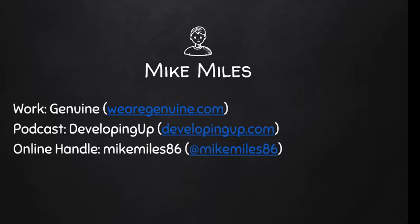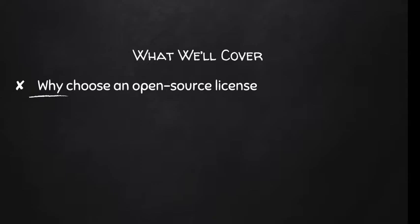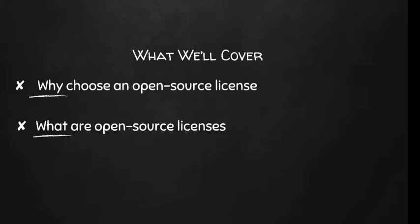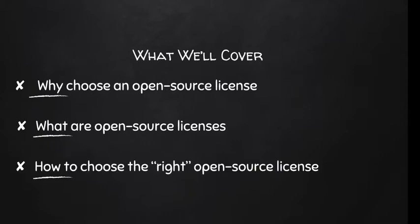If you want to know more about me after this talk, everywhere online I'm just MikeMiles86 — that's usually my handle. So what we're going to cover today: I broke this up into three sections. First and foremost, why to choose an open source license for your project and what's the importance of doing that. Following that is what open source licenses actually are, the protections they provide and what they seek to accomplish. And then finally, how to choose the right open source license for your project either today or going forward.